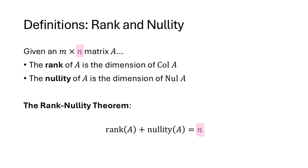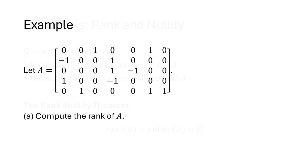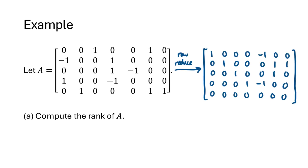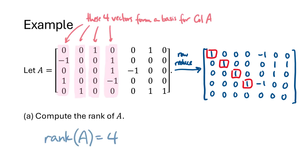Before we get into why the rank-nullity theorem is true, let's work through an example. Here we have a matrix A, and first we're asked to compute the rank of A. The rank of A is the dimension of the column space of A, which is the number of vectors in a basis for the column space of A. So let's find a basis for the column space of A and count the number of vectors — that number will be the rank of A. We row-reduce A, identify its pivots, and the corresponding pivot columns of the original matrix A form a basis for the column space. There are four pivot columns, which means the rank of A is four.